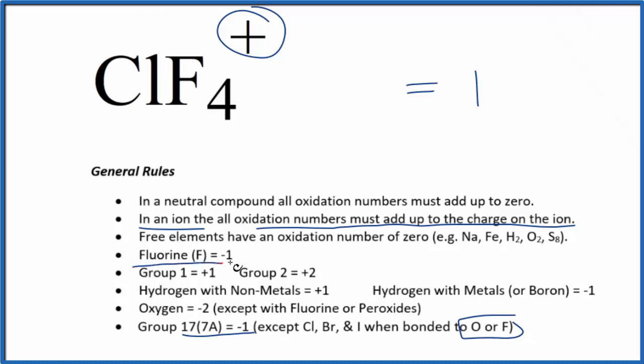Fluorine is always going to have an oxidation number of -1. So each fluorine atom has an oxidation number of -1. The chlorine we don't know, we'll call that x. So we set up an equation.